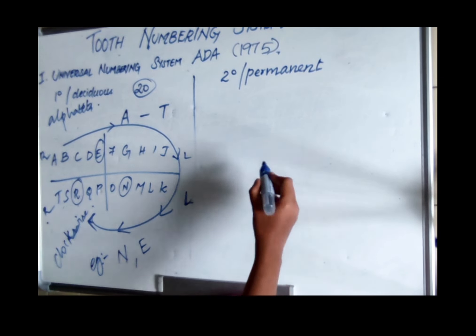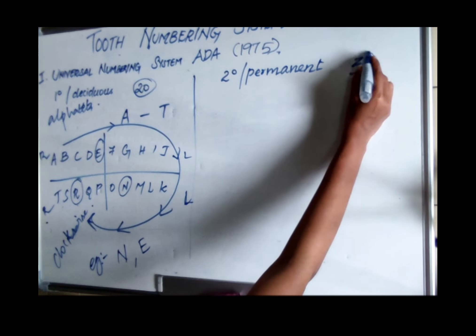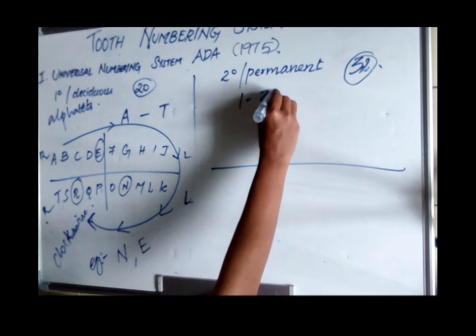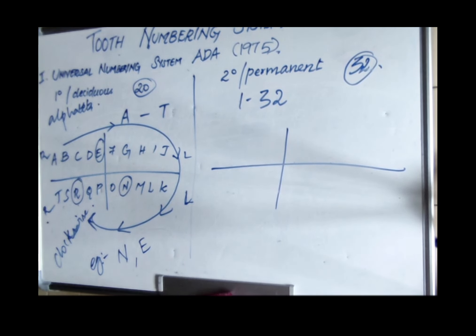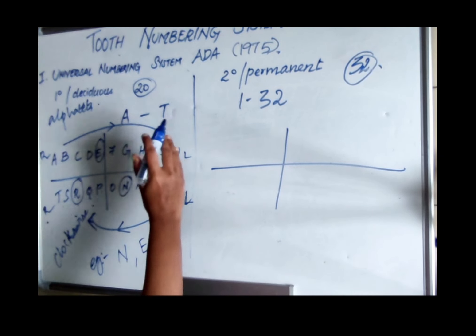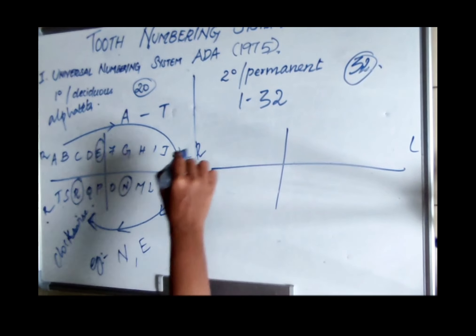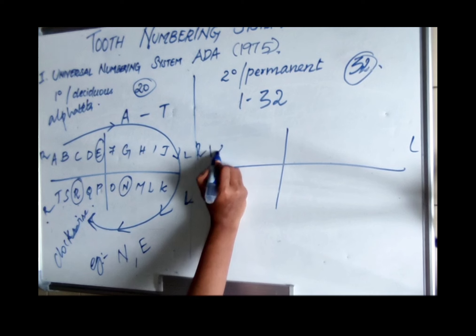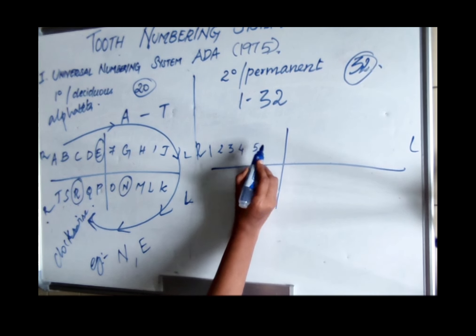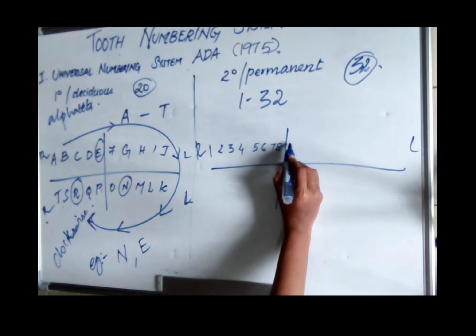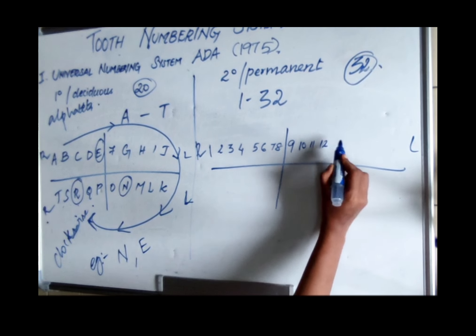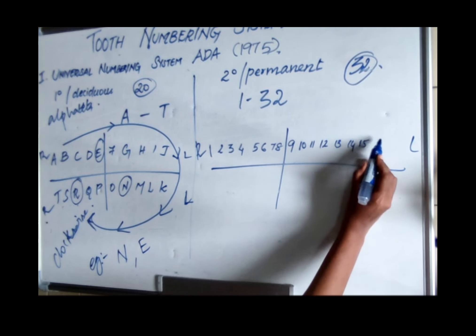For permanent dentition in the Universal system, we have thirty-two teeth numbered 1 to 32, following the same clockwise direction. Starting from the maxillary right third molar as number 1, going 1 through 8 on the maxillary right, then 9 through 16 on the maxillary left.